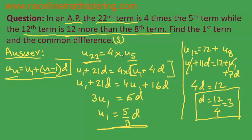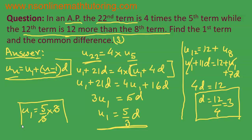The common difference is equal to 3. Therefore, the first term u1 is equal to 5 over 3 times 3, which is 5. So u1 is equal to 5 and the common difference is equal to 3. We have completed solving question number 1 of this session. Let us move on to the next part.